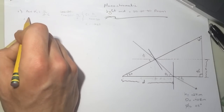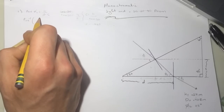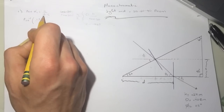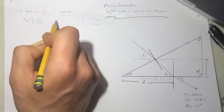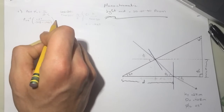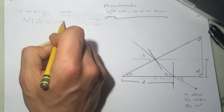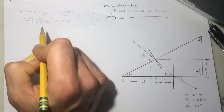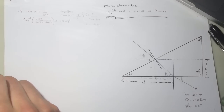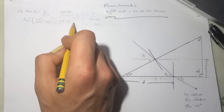Now plugging back in: tan inverse of H divided by (D minus C) — so that's tan inverse of 0.27 divided by (0.708 minus 0.467). For this angle I got 48.33 degrees. So theta2 equals 48.33 degrees.